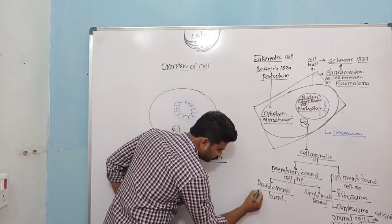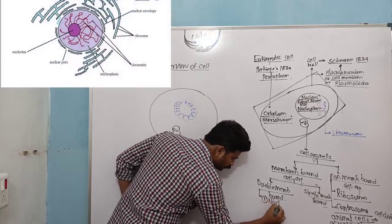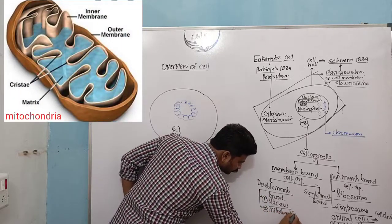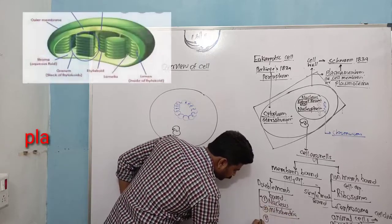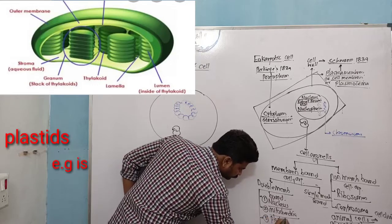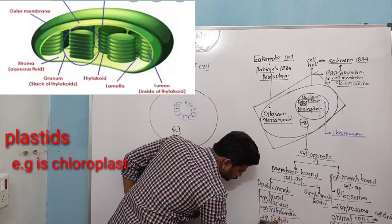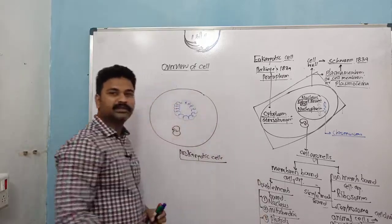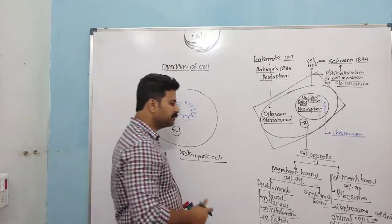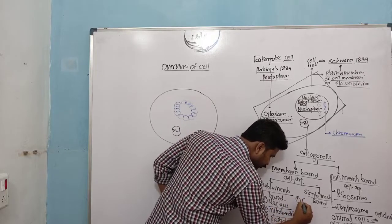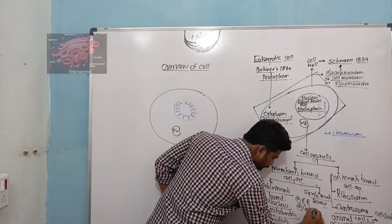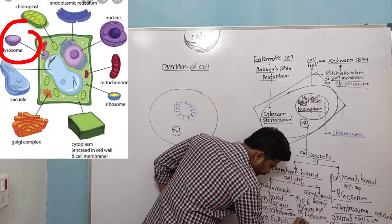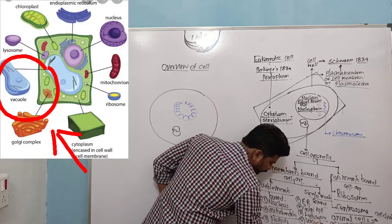Double-membrane-bound cell organelles are: number one, the nucleus; number two, mitochondria, which is the powerhouse of the cell; and number three, plastids, for example chloroplast, which is the kitchen of the cell. Single-membrane-bound cell organelles are: endoplasmic reticulum, Golgi apparatus, lysosomes (the suicide bags), vacuoles, and microbodies.